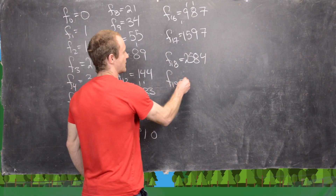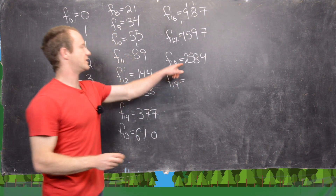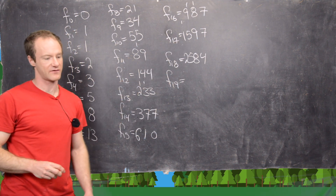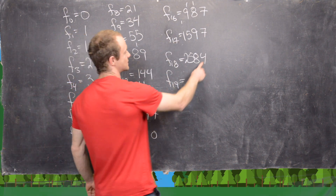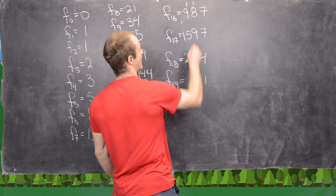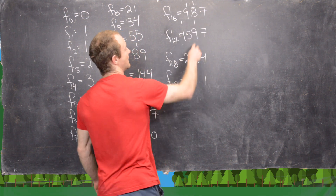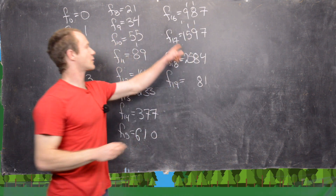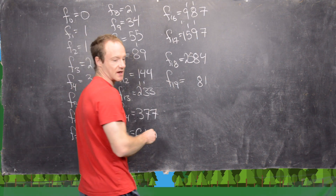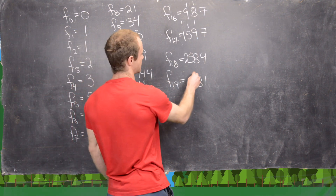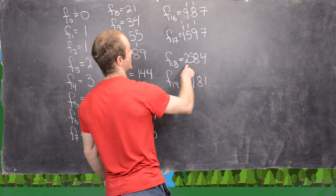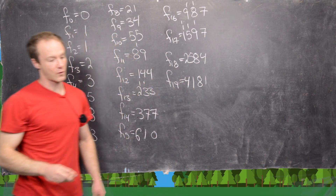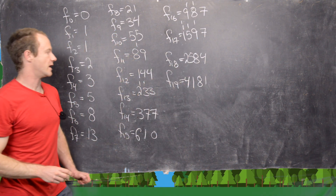Now the 19th Fibonacci number will be 2,584 plus 1,597. So let's see: 4 plus 7 is 11. And then here we have 18. And then here we have 5 plus 5 plus 1, which is 11. And then here we have 2 plus 1 plus 1, which is 4. So we have 4,181.